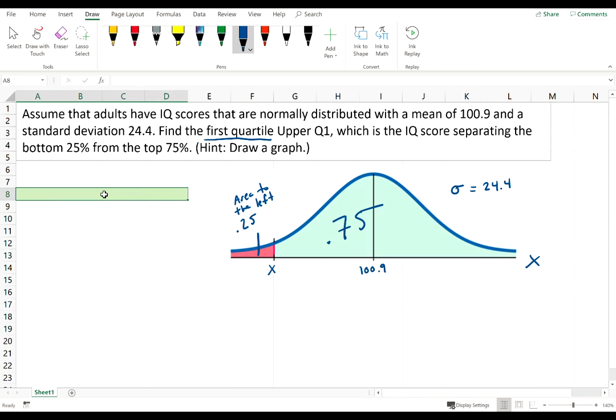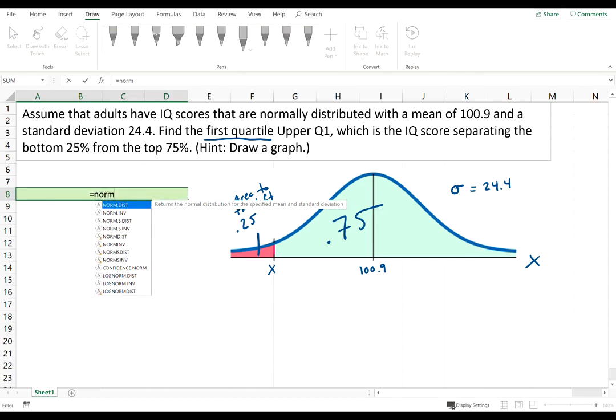You could type =NORM.INV. That's the normal inverse function. Excel is asking us in parentheses for three things: the probability, the mean, and the standard deviation. The probability is the area, that's 0.25, and we're given the mean and the standard deviation.